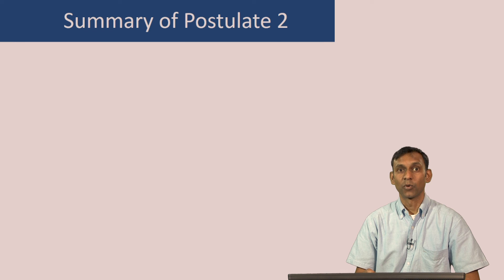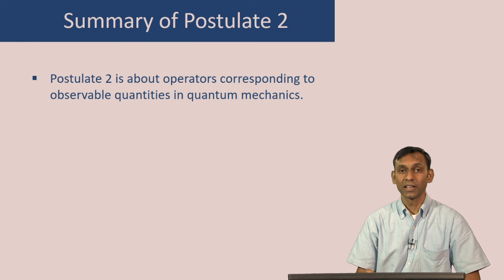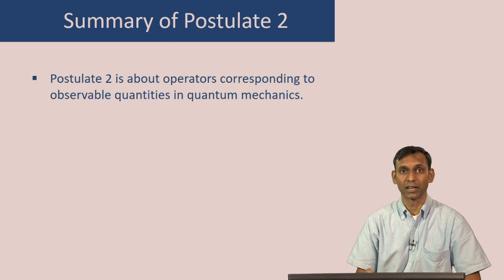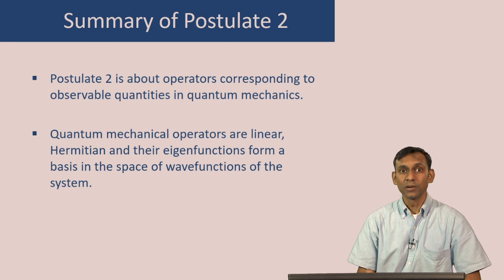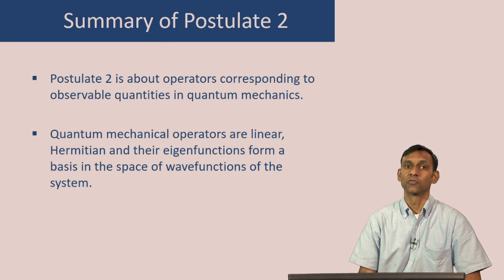To summarize, postulate 2 is about operators corresponding to observable quantities in quantum mechanics. Starting with a classical variable and replacing the position and momentum variables by the corresponding position and momentum operators, we can get the operator for any observable. Furthermore, quantum mechanical operators must be linear, Hermitian, and their eigenfunctions must form a complete basis in the space of wave functions of the system.